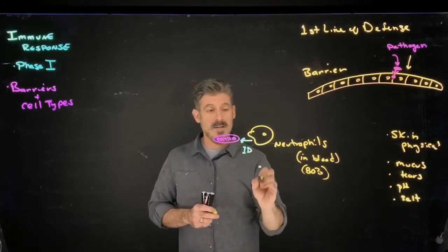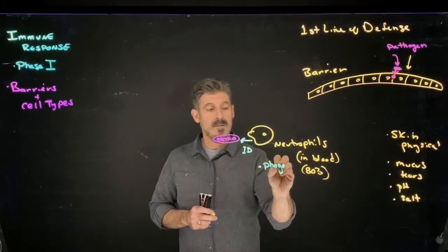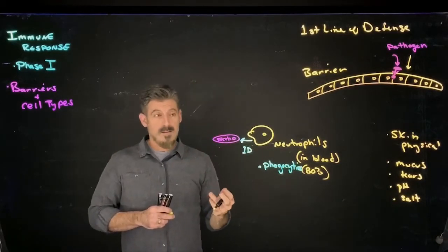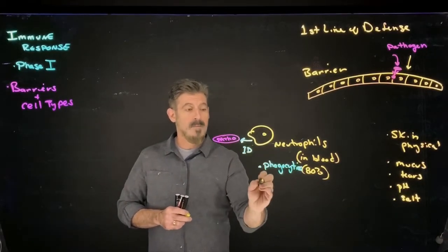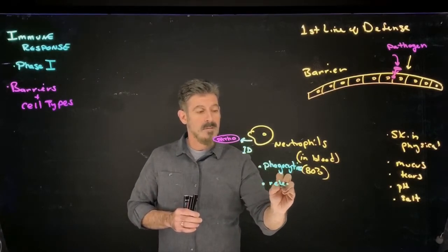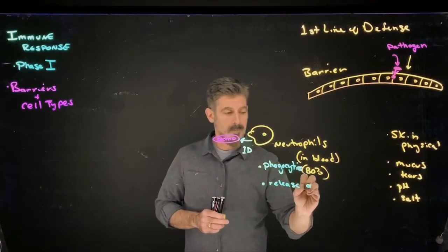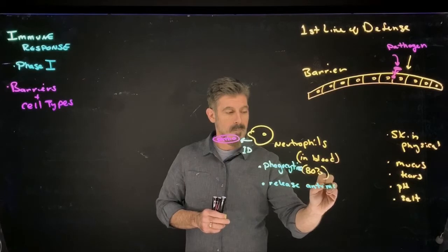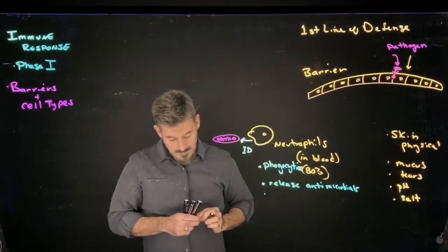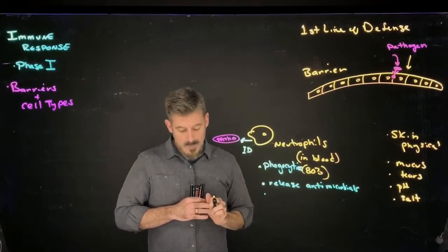What the neutrophils can do is they can identify this as being a pathogen, and then they're going to act. Some of the different things they can do: one is they can phagocytize, essentially eat the cell. A second thing they could do is release some types of antimicrobial agents.